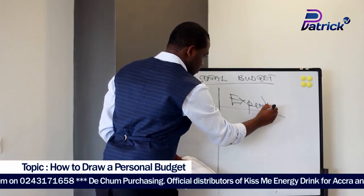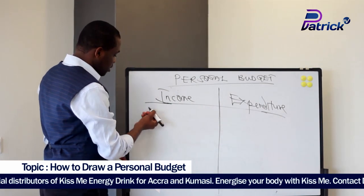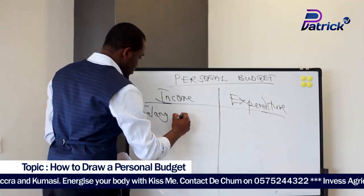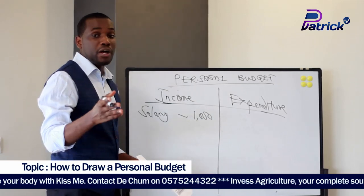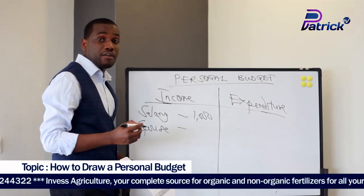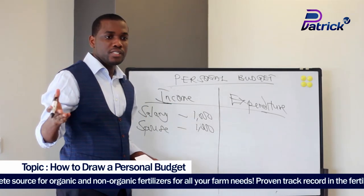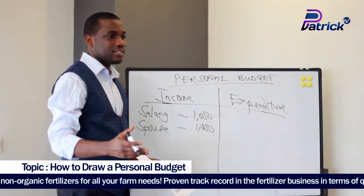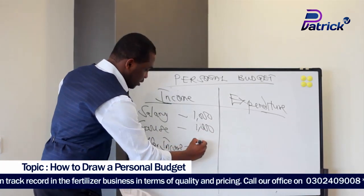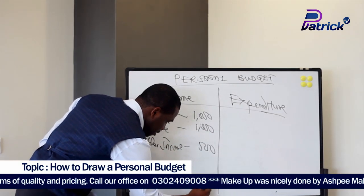On the income side, if you are single just write your income — let's say salary, assuming your salary is 1,000 cedis. If you are married, you can write your spouse's income, let's say also 1,000 cedis. Then maybe you have a little business — buying and selling — so you write that income too, let's assume that is 500 cedis. So this part gives you a total of 2,500 cedis.